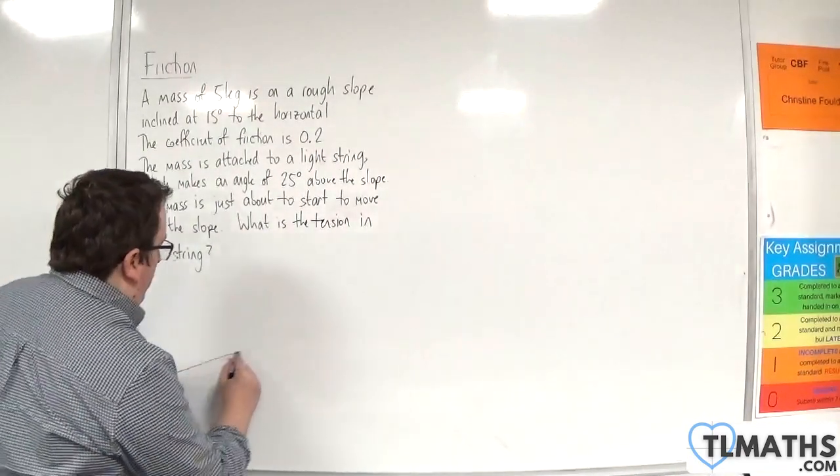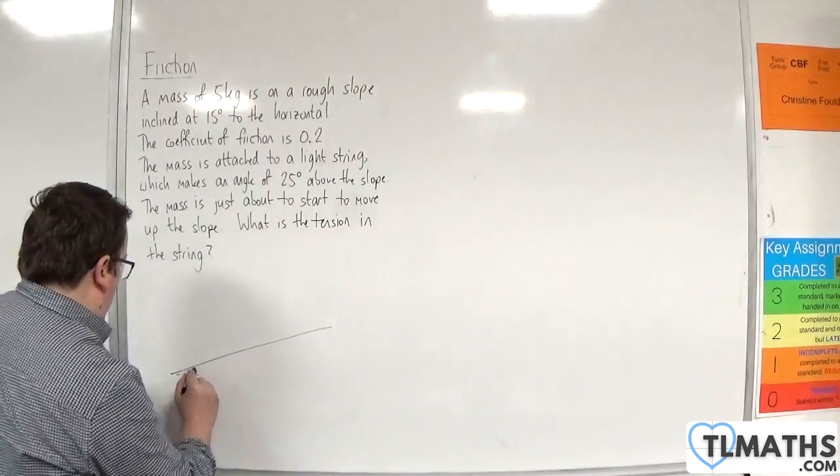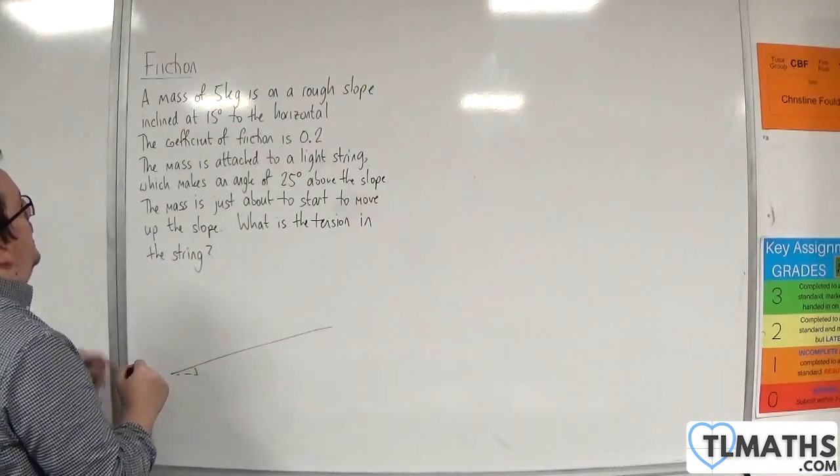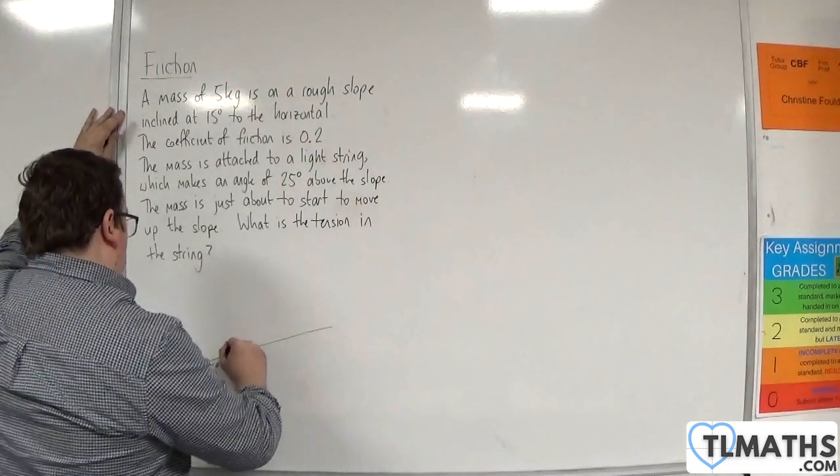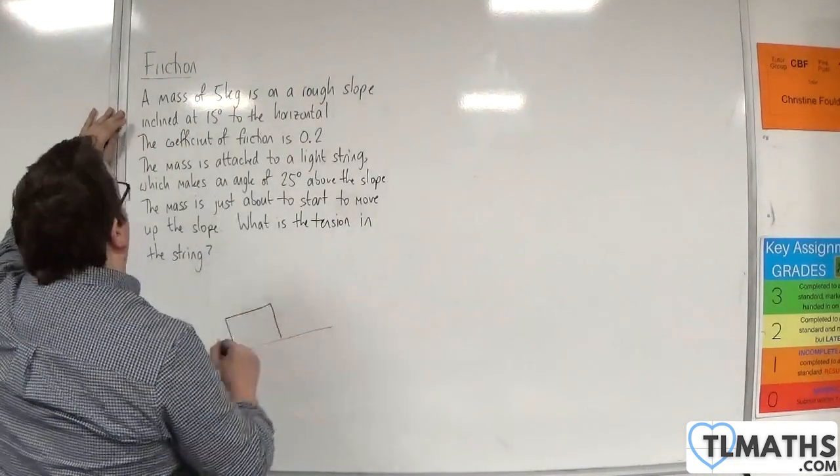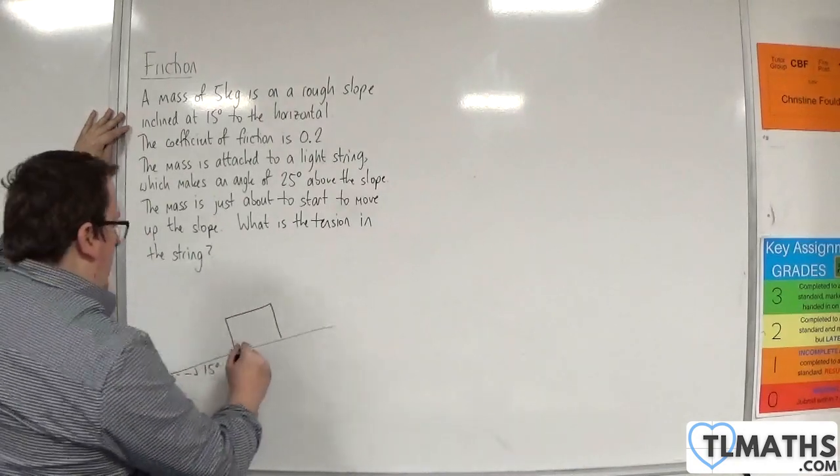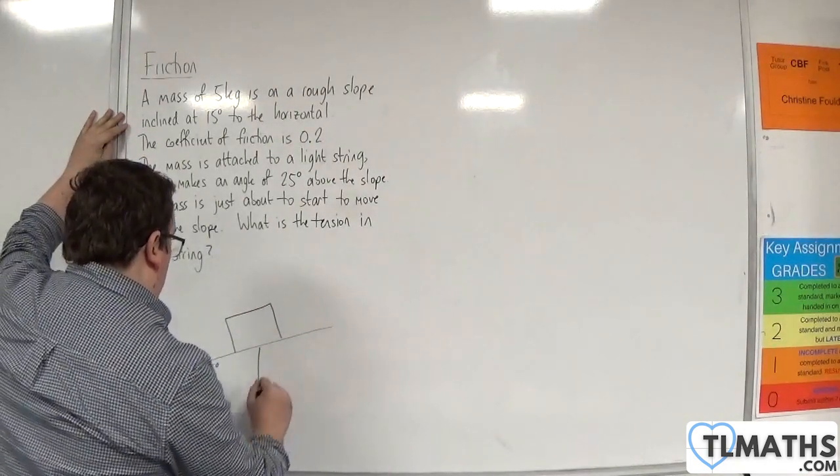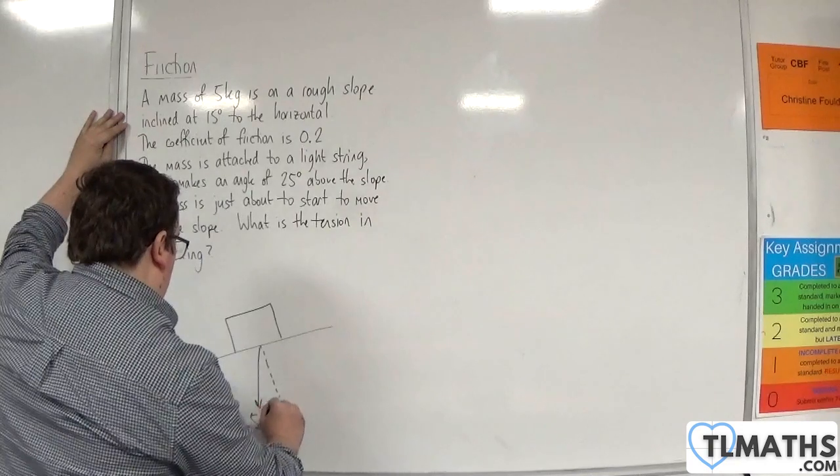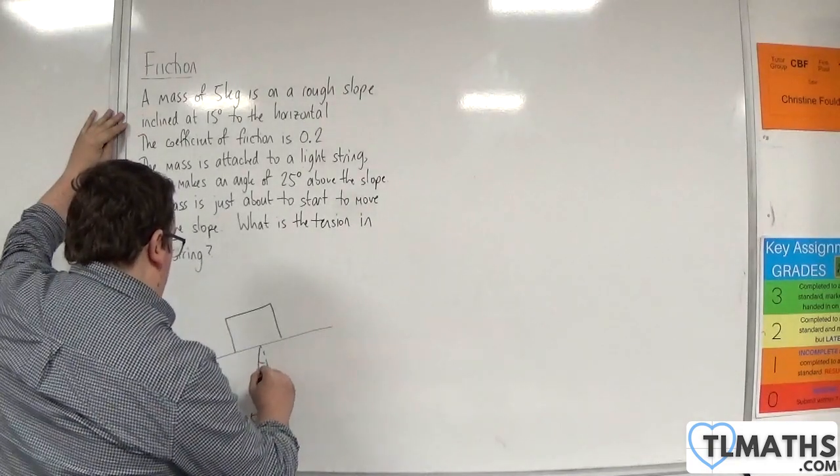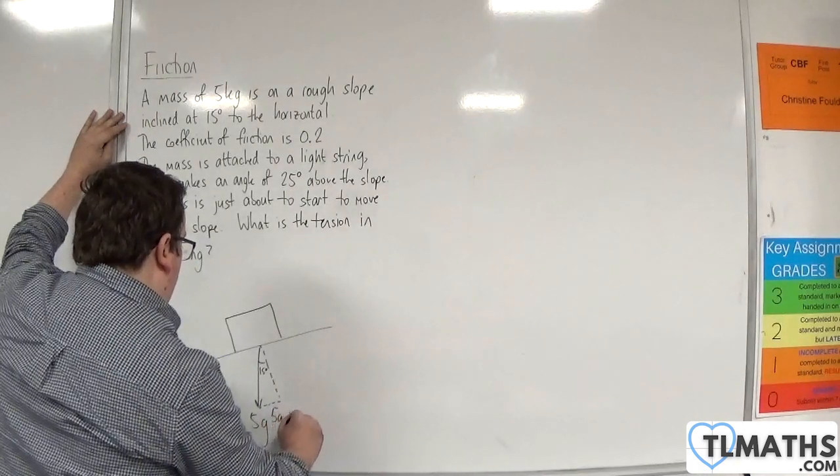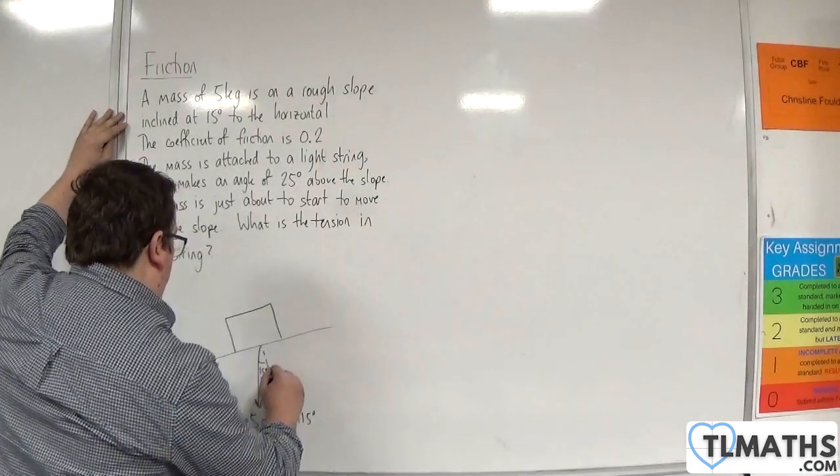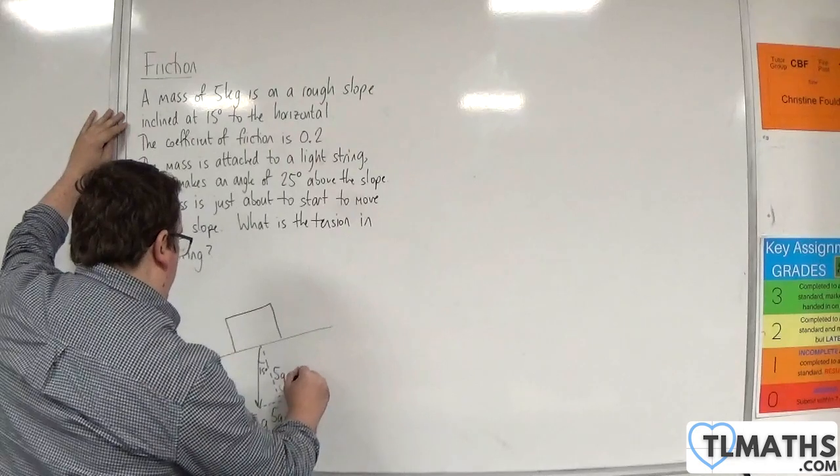Okay, so we have a slope, and the angle here is 15 degrees to the horizontal. Here is our mass of 5 kilos, so it's got a weight of 5G. This angle is 15 degrees, so this would be 5G sine 15, and this would be 5G cosine 15.